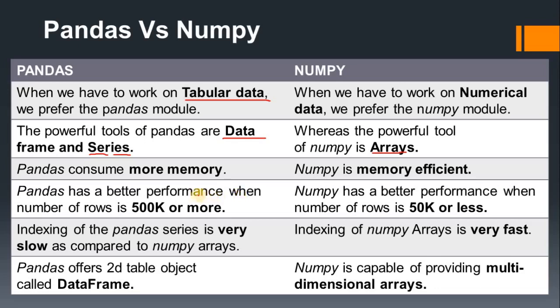The next difference is that pandas offers a two-dimensional table object called DataFrame, which we commonly use in pandas for getting data in tabular form — in the form of rows and columns. Numpy is capable of providing multi-dimensional arrays.